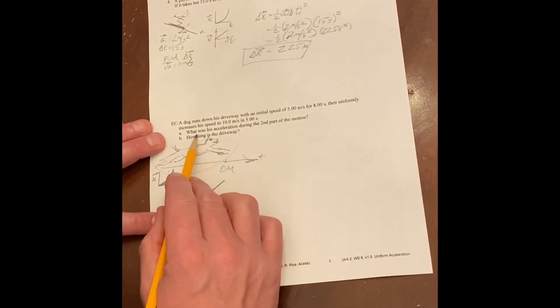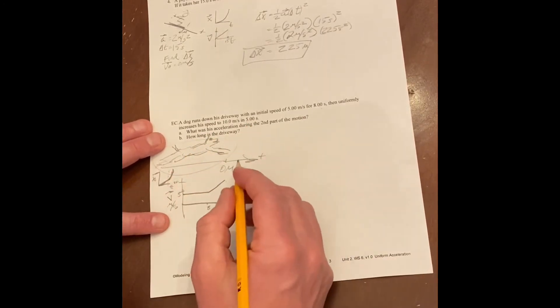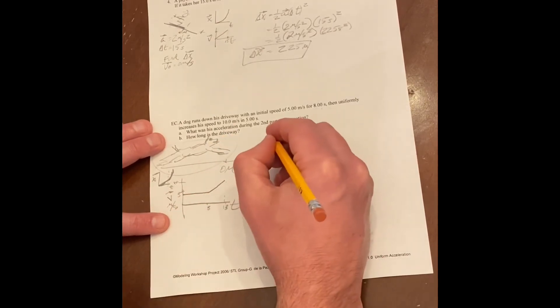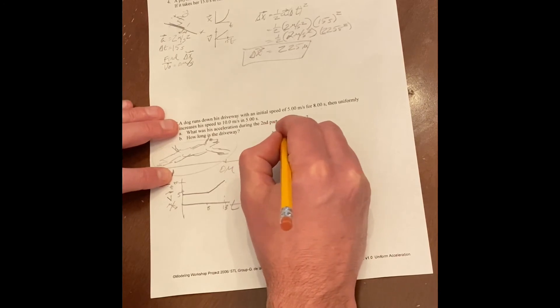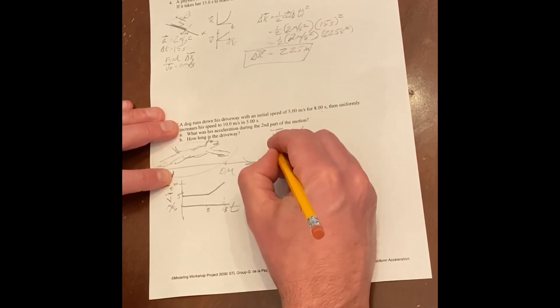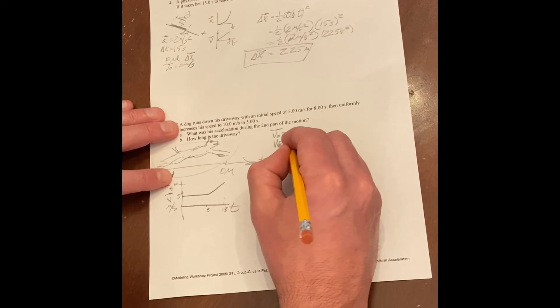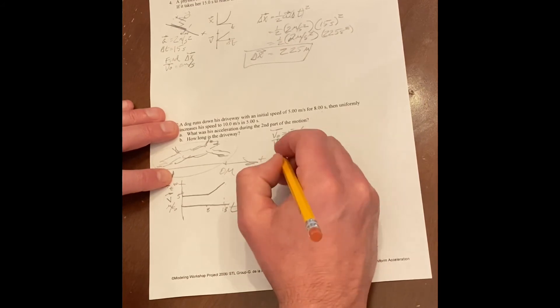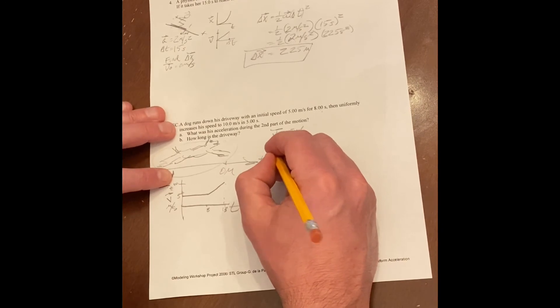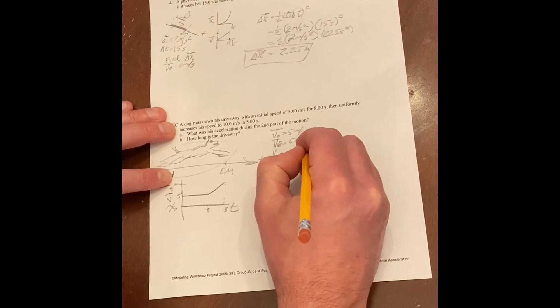I want to find the acceleration and how long the driveway is. So what did they give us? Velocity at time zero, five meters per second. Velocity initial, which would be the eight second mark, is still five meters per second. And then velocity at 13 seconds is 10 meters per second.